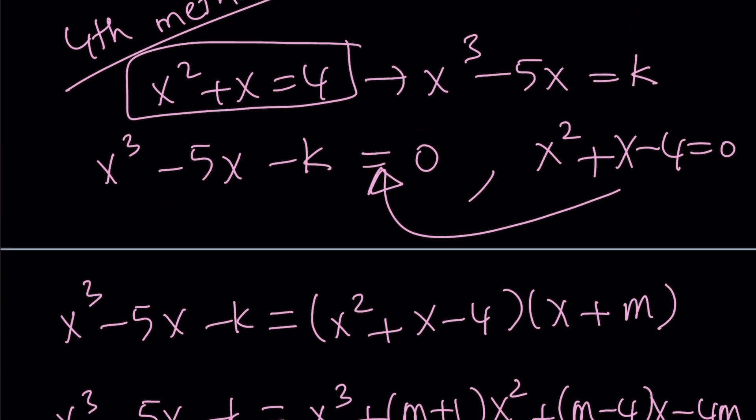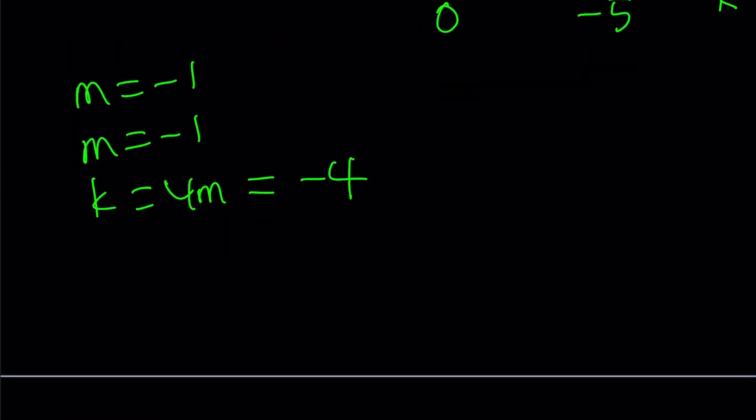What is k, though? k is what I am looking for. k equals negative 4 implies x cubed minus 5x equals negative 4 as the answer.